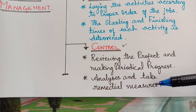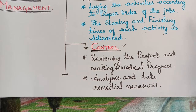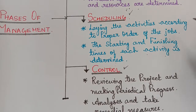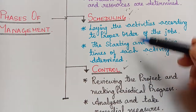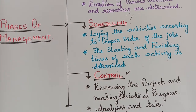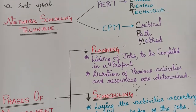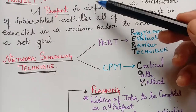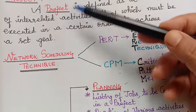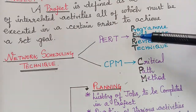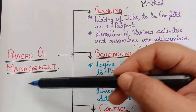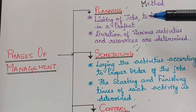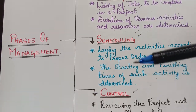These are the three phases of a project. In particular, PERT and CPM are especially useful for the Scheduling and Controlling phases of project management. In this video, we have learned what a project is, the techniques used to solve a project — PERT and CPM — and the three phases of project management: Planning, Scheduling, and Control.